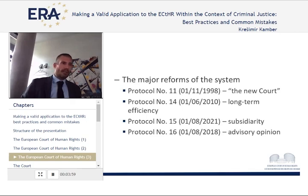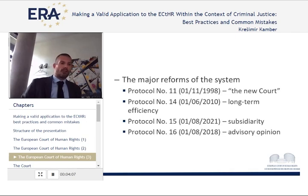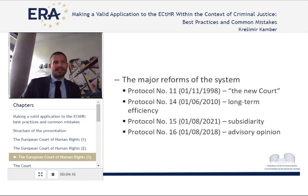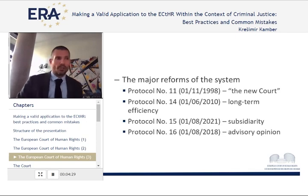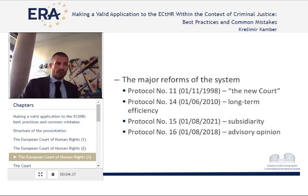Around that time — in fact in mid-2011 — when this reform still hadn't fully been put into place, the court had the peak absolute number of pending cases, which was more than 160,000 cases on its docket. This reform with Protocol 14 aimed to ensure that the court could filter those cases. The institute of the single judge was established with this protocol, and also wider competencies of committees and some other measures.